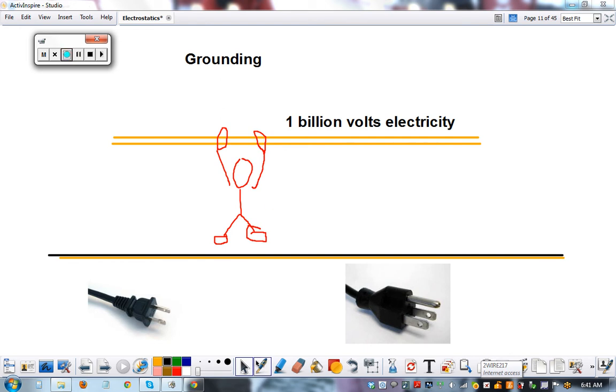He's actually not going to get shocked and it's not because his arms aren't attached to his body. It's because electricity wants to take the easiest path to get to where it wants to go. The wire is a really good insulator. Your body, especially your skin, is actually pretty protective against getting shocked.